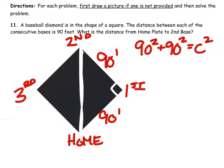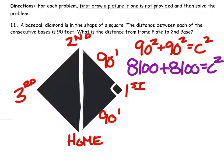We're going to square both the legs and add them together. So that gives us 8,100 plus another 8,100 equals C squared. And now when I combine both the 8,100s, I get 16,200 equals C squared.